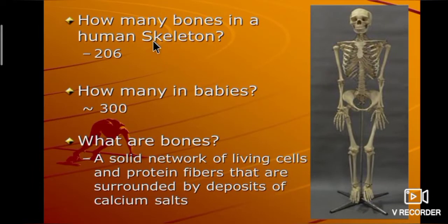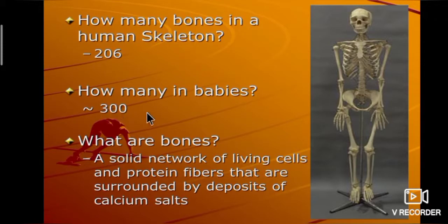How many bones are in a human skeleton? An adult has 206 bones. A newborn baby has 300 bones. Bones are a solid network of living cells and protein fibers that are surrounded by deposits of calcium salts.